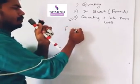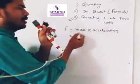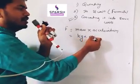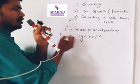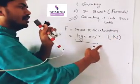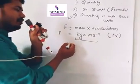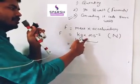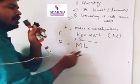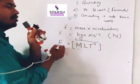Force is mass into acceleration. Mass is kg, acceleration is meter per second square. The SI unit is Newton, and we are converting it into basic units. Force equals kg times meter per second square — so kg means M, meter means L, and second means T to the power minus 2. This is the dimensional formula for force.